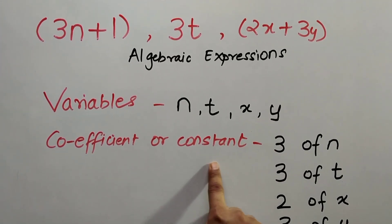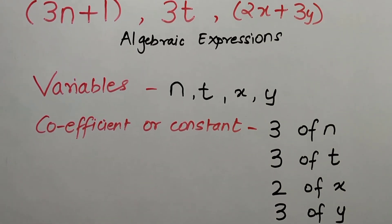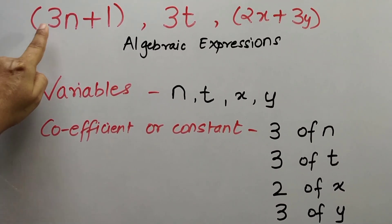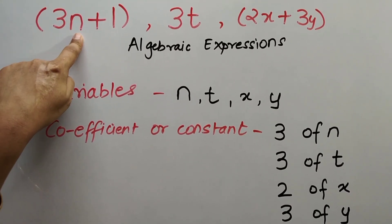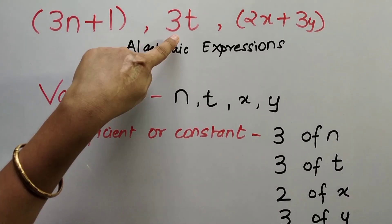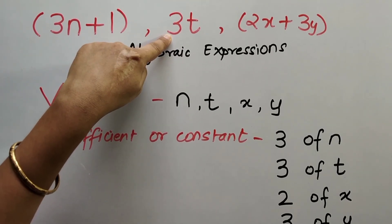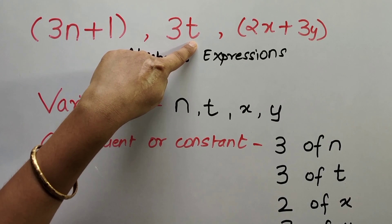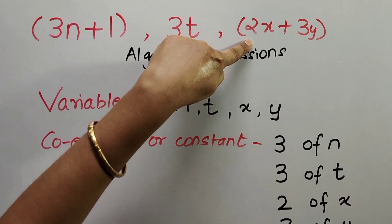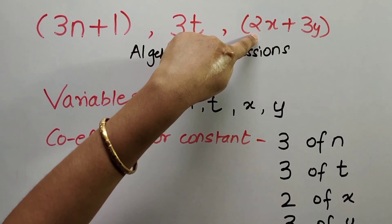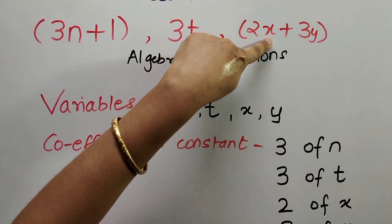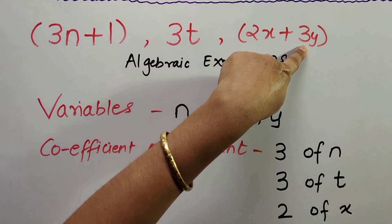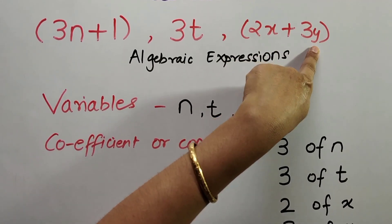Now let us see what are coefficients or constants. In this expression, 3 is the coefficient of the variable n. In this expression, 3 is the coefficient or constant of variable t. In this expression, 2 is the coefficient of variable x and 3 is the coefficient of variable y.